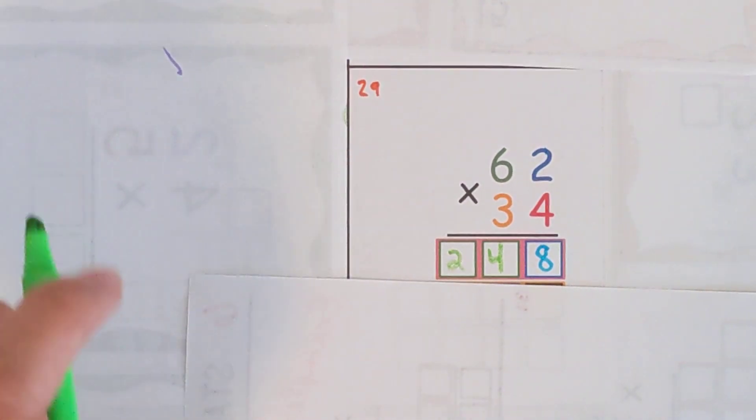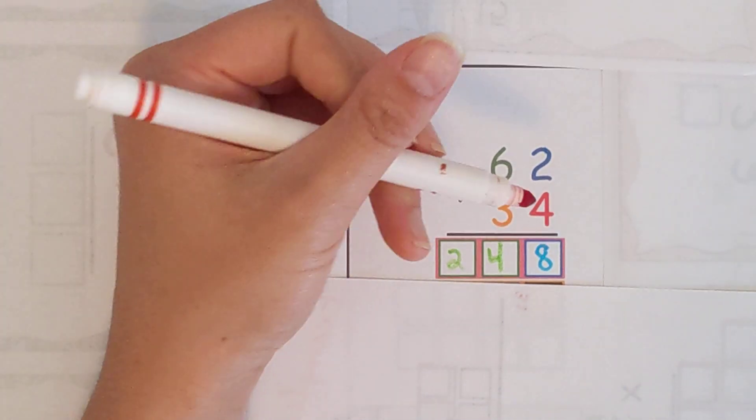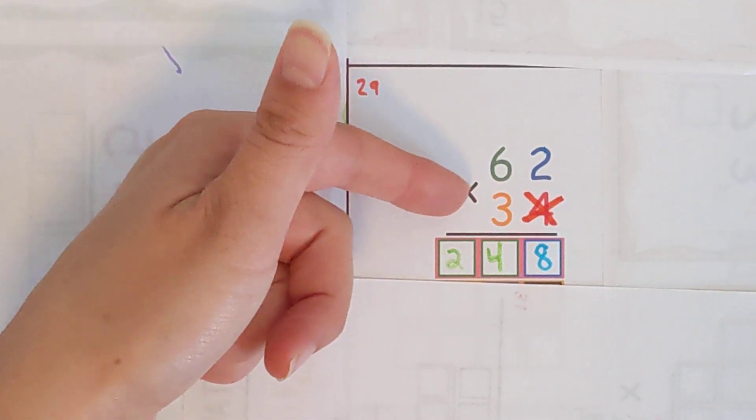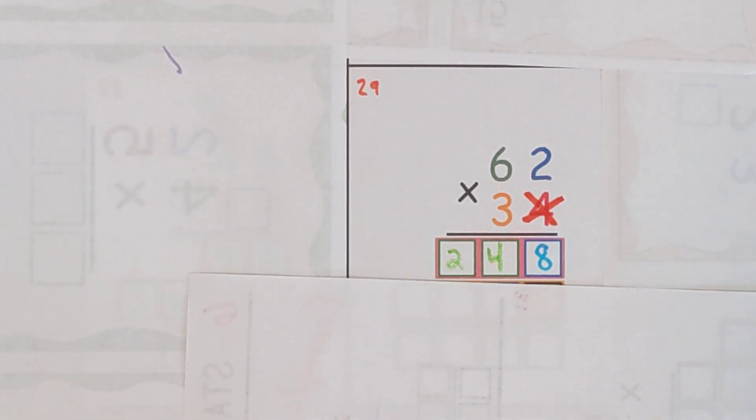So now the four is done. We can cross it out and we're just going to do it again but instead of the four because we already used it we're going to use a three.